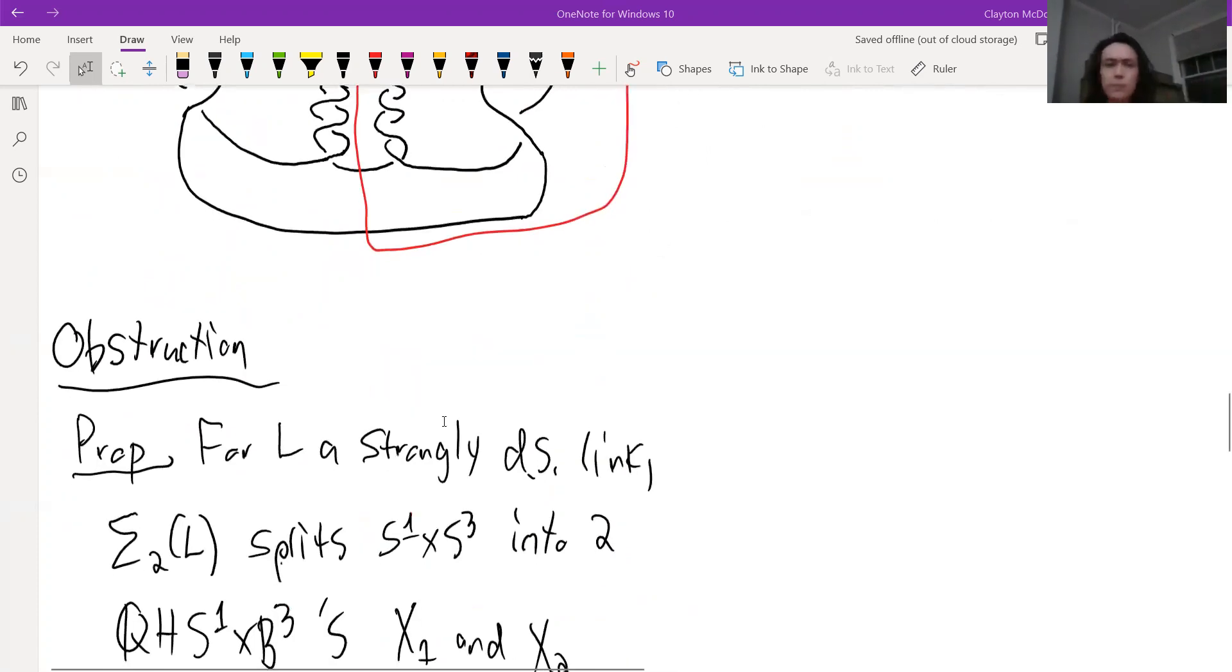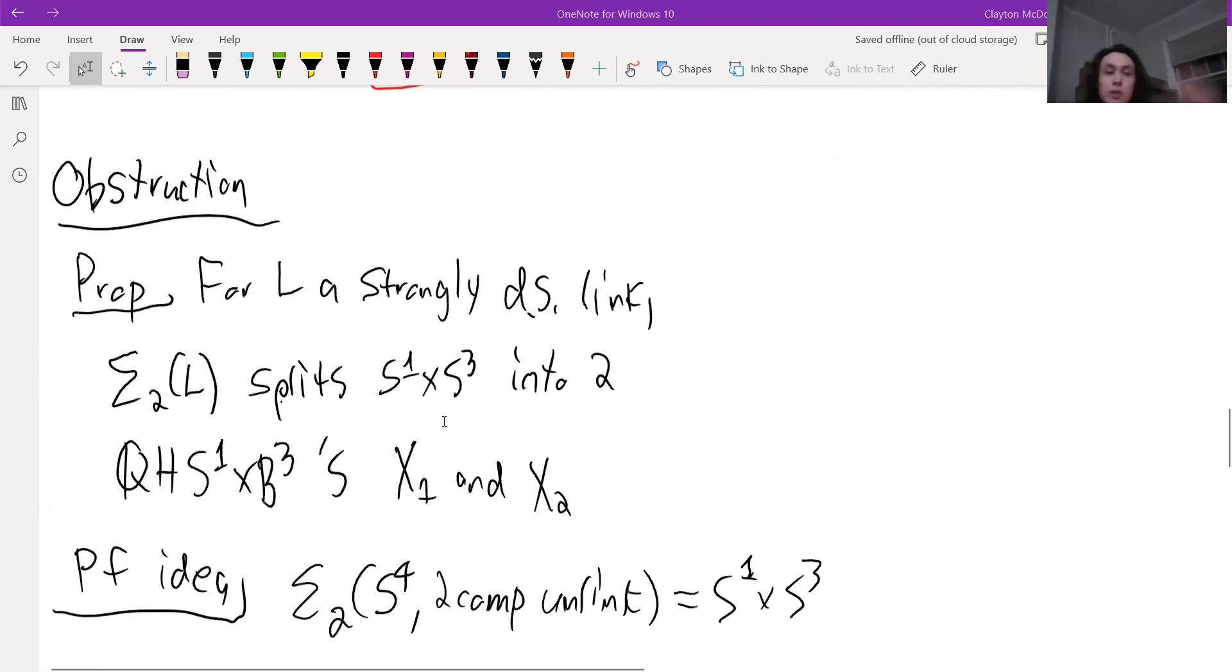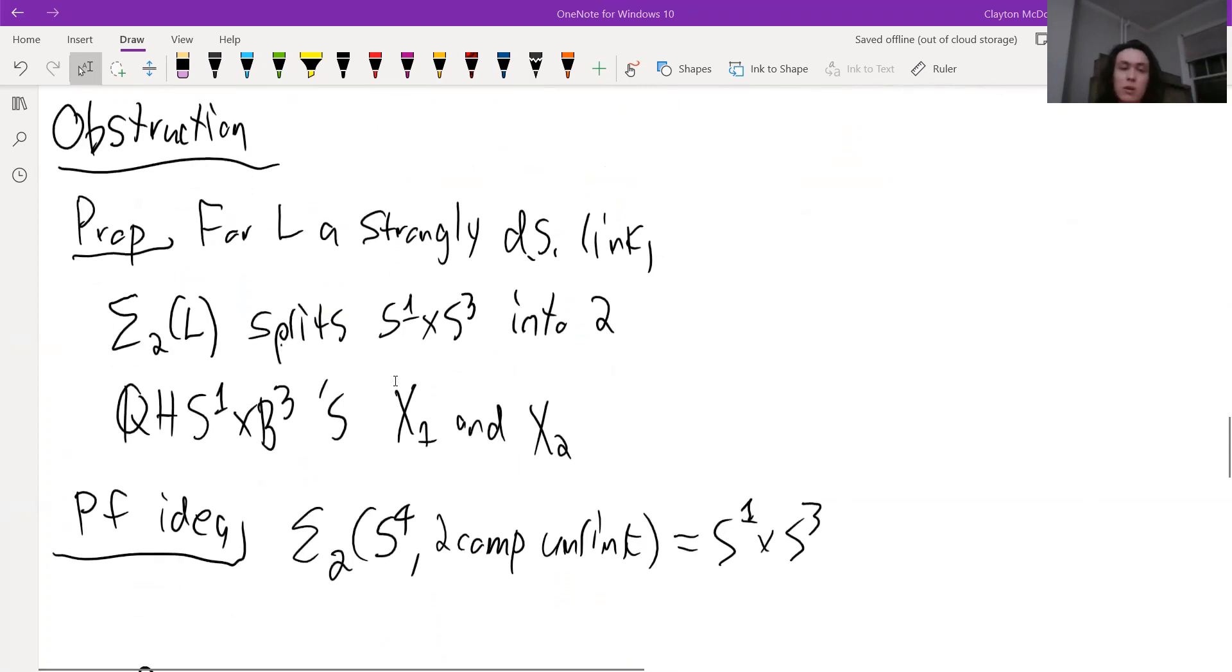So what's our obstruction? So our obstruction is going to involve the following. First, we have this proposition which says that if we have a strongly doubly slice link, then we know that the double branch cover of that link splits S1 cross S3 into two rational homology S1 cross B3s, X1 and X2.